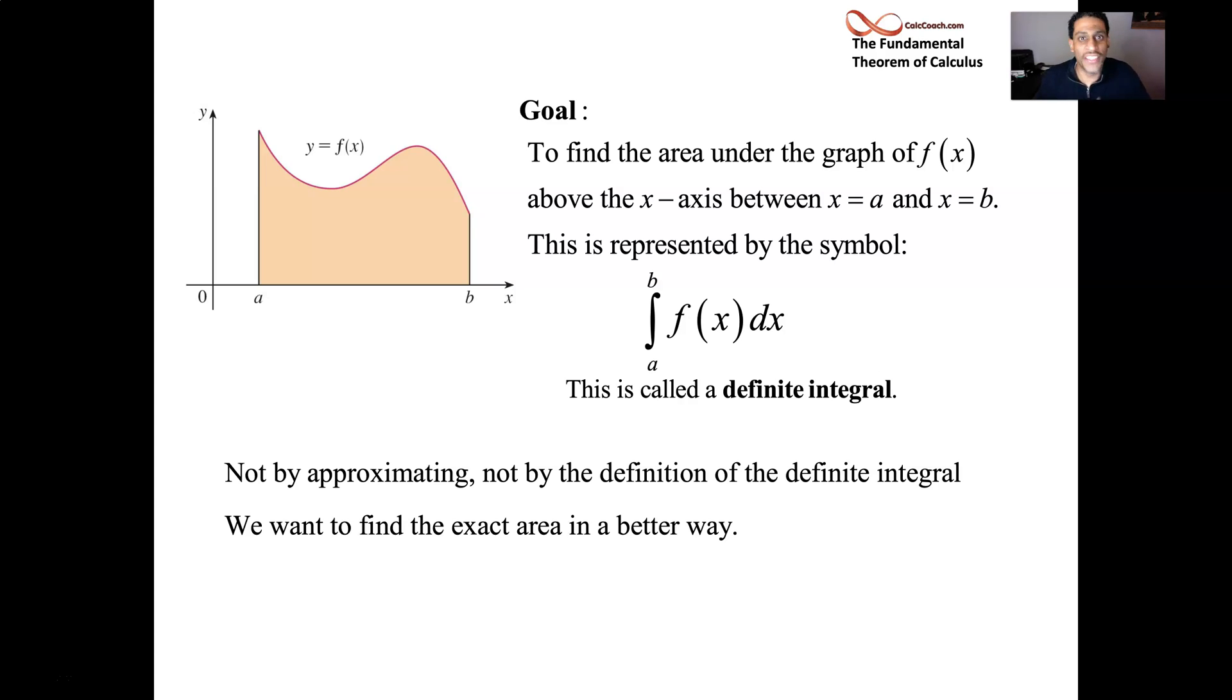What helps us to do this is the fundamental theorem of calculus part one, where it says, if you're asked to find this definite integral, your job should be to go find the antiderivative of that function. And so it says, as long as your function is continuous on a closed interval from a to b, then this definite integral can be found by going out and finding the antiderivative of that function, that is the integrand,